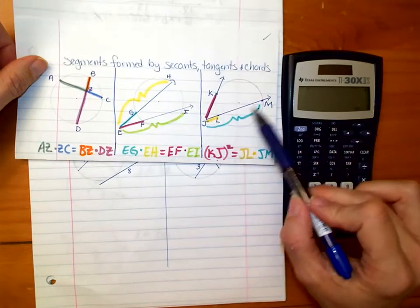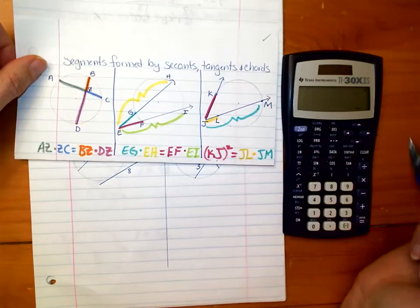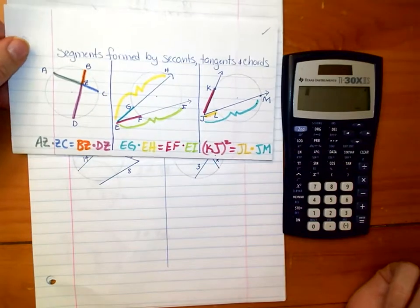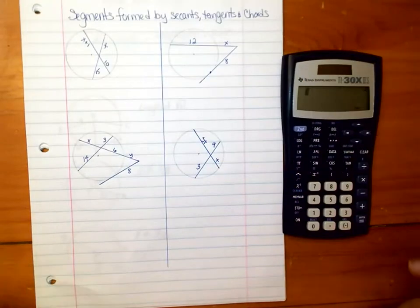If one of them is a tangent, then it's the whole thing times the outside part of the secant, but the tangent squared. You should have those formulas written down or memorized. That would be best. So we're going to use those formulas.